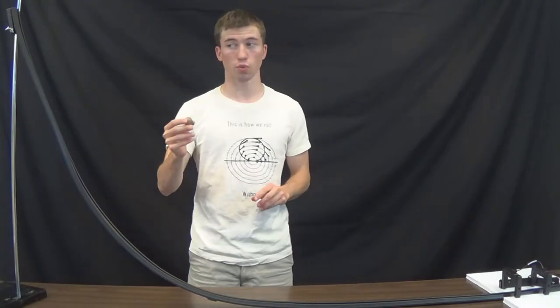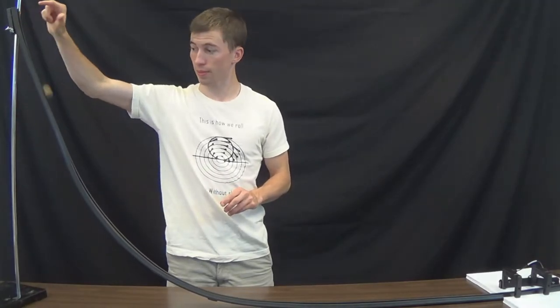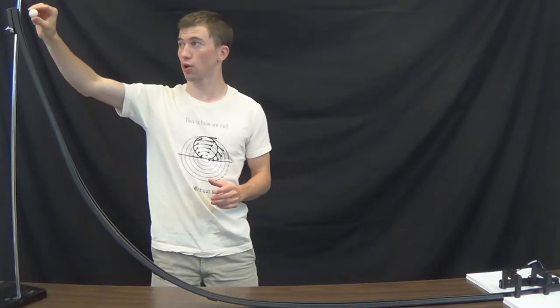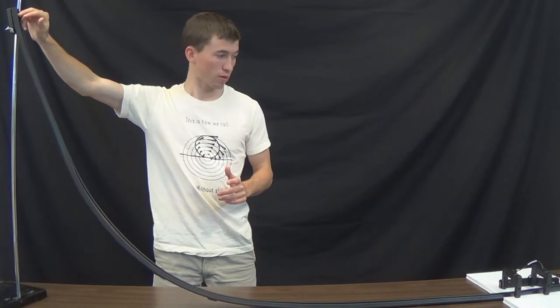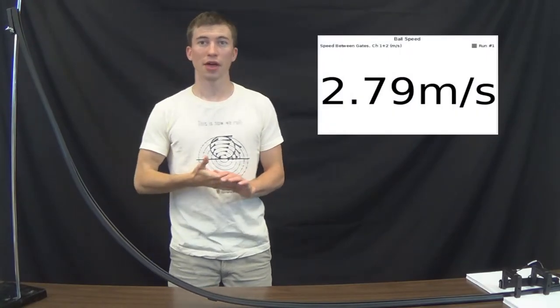Now I'm going to use the wooden ball. That provides us with a slightly faster 2.79 meters per second. Finally, with the plastic ball, that also provided us with a speed of 2.79 meters per second, still a little higher than the metal ball bearing but lower than our theoretical value.